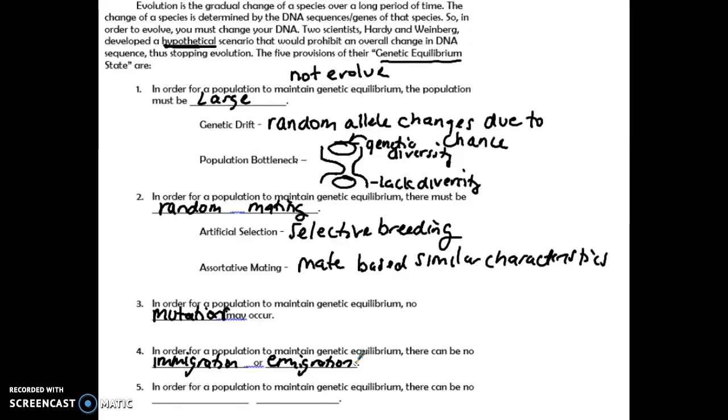The fifth is that you can have no natural selection. So survival of the fittest doesn't happen. The idea that all people can reproduce an equal amount, that's what's going to happen in that scenario. So all five of these are never going to be abided by. Therefore, this kind of says that evolution, we can't stop. Those five things are going to happen.